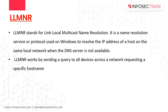LLMNR is used for resolving the IP address of a host on the same local network. It works by sending a request to all devices across the network requesting a specific hostname, using a name resolution request packet. If there is a device with that hostname, it responds with a name resolution response packet containing its IP address, and then the connection is established.